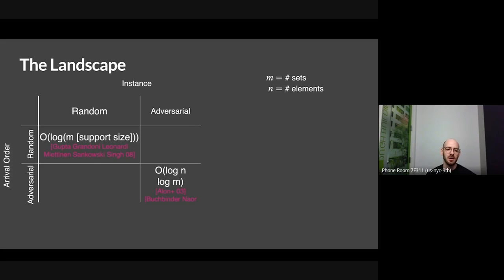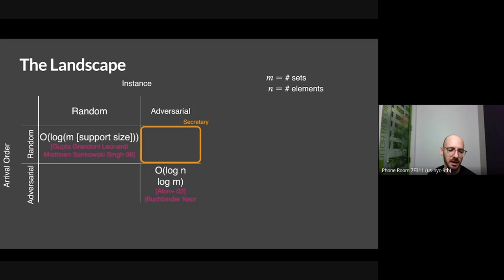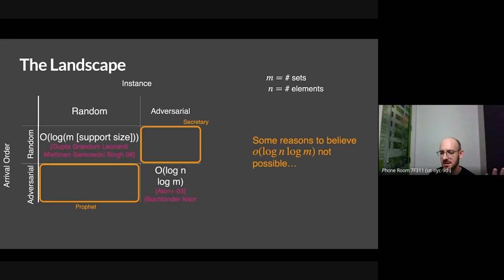What about the other two boxes? Actually, nothing was known. I'm going to call one box the 'secretary box,' in analogy with the classic maximization problem — the max-finding problem in random order is called the secretary problem. And the other I'm calling the 'profit box.' There was good reason to believe you can't beat log n times log m, and I think that's why these evaded characterization for so long. We'll talk about what those reasons are.